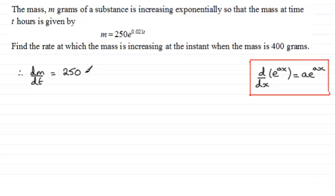And if we differentiate e to the power 0.021t, we're going to get 0.021, and then it's going to be e to the power 0.021t.